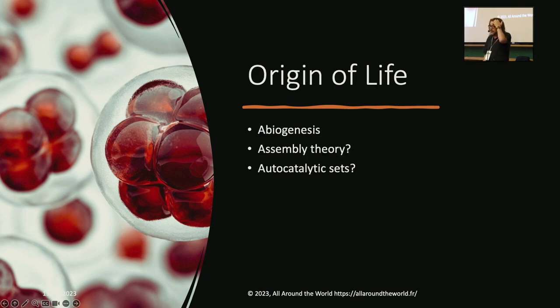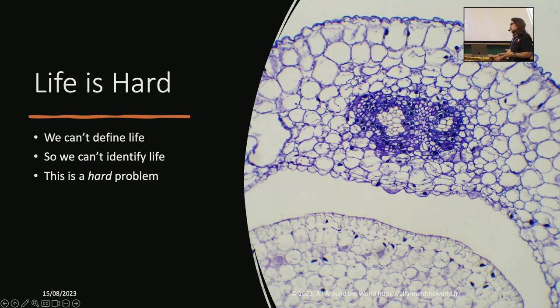And then we have to deal with the origin of life. Abiogenesis is a very complicated problem. Evolution, it's pretty much accepted in the literature. There's no question about that. But abiogenesis, how did life arise from non-life, that one gets extremely complicated, and we just don't know. But there's some amazing work being done there with assembly theory and autocatalytic sets. This is where we get stuck. And this is the problem we have with looking for life outside of Earth, because we don't know how life arose in the first place. So life is a hard problem. How do you detect life if you cannot define life? We don't know.